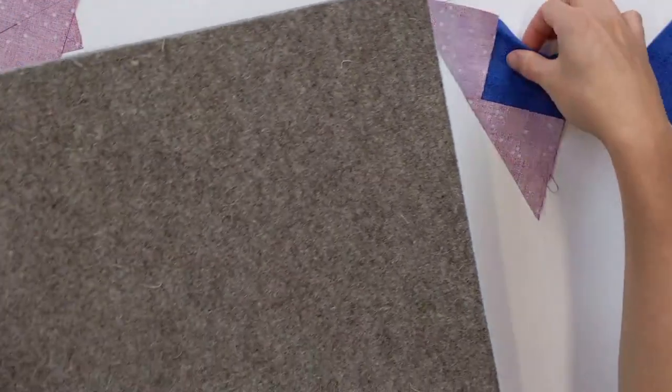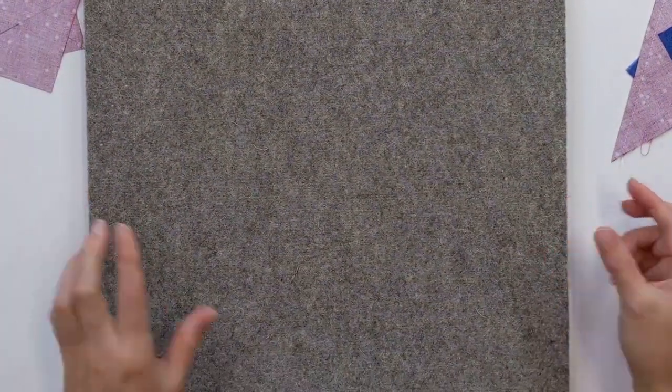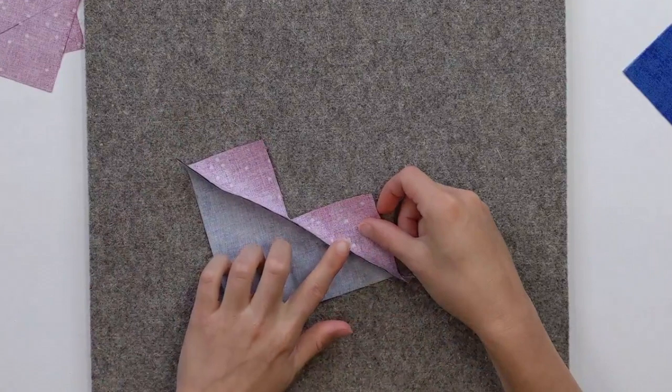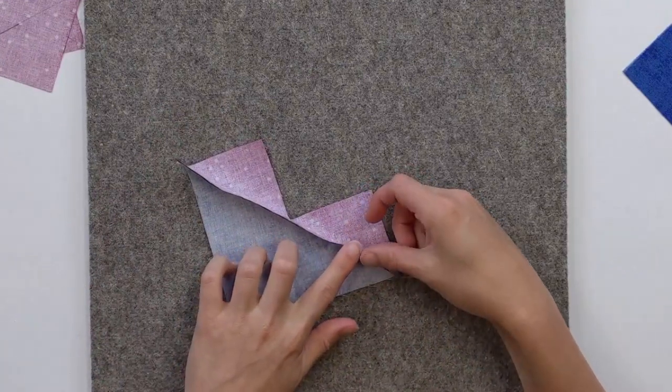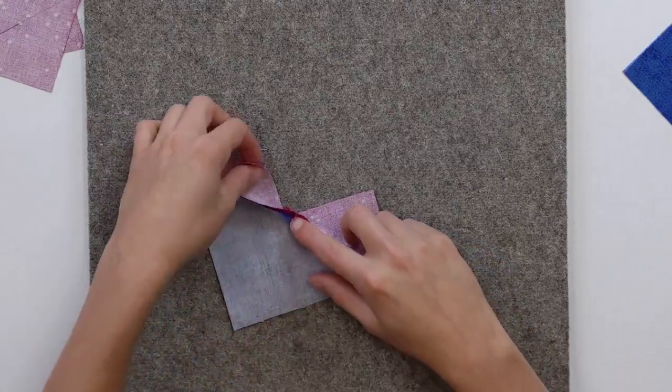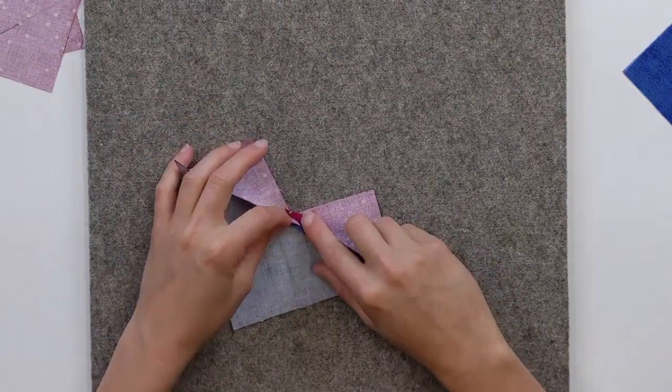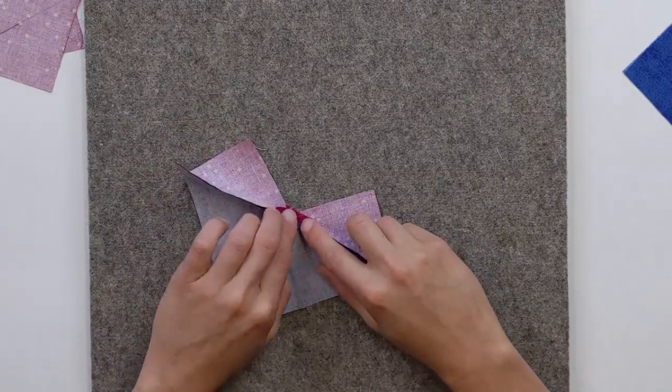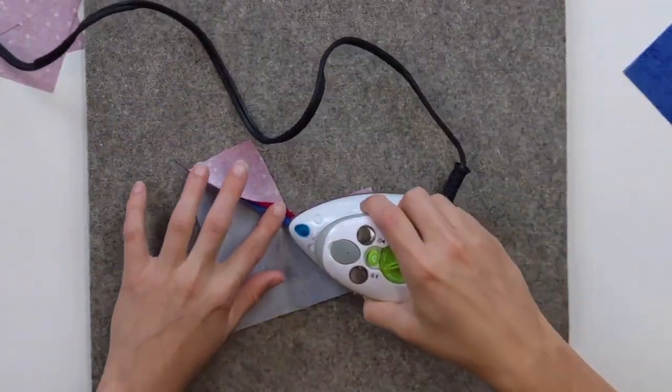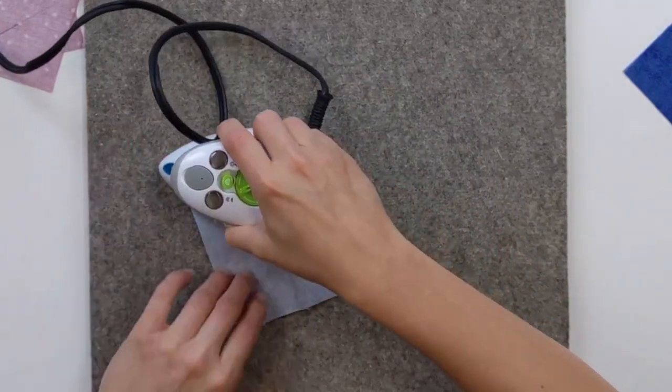I like to press open. There's always a lot of debate in the quilting world whether you press open or you press to the side. I find with flying geese units, however, the center part is going to get really bulky. Cause now look, there's two already, two, three folds of fabric. We're going to be adding one more. It gets to be a really bulky spot. So I recommend, at least for flying geese, press open.